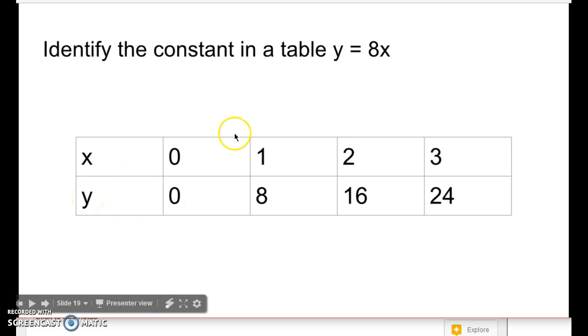So y equals 8 times the x. So 1 times 8 equals 8, 2 times 8 equals 16, 3 times 8 equals 24. So there's the relationship between multiplication and division. The constant is always 8. You're multiplying or dividing by 8.